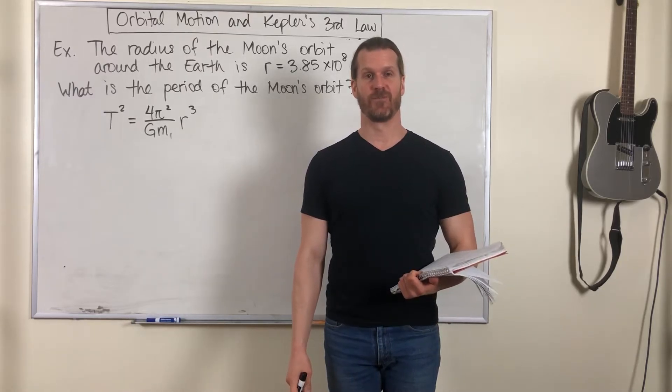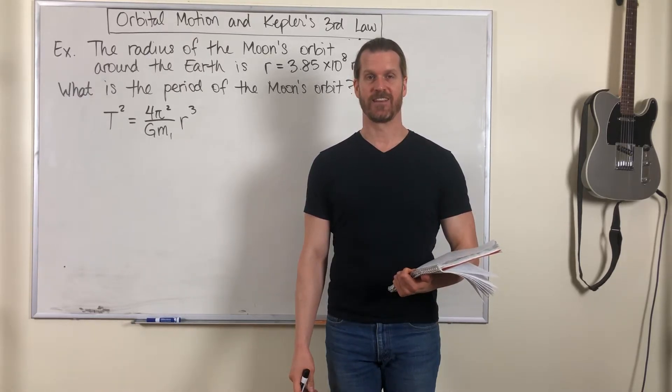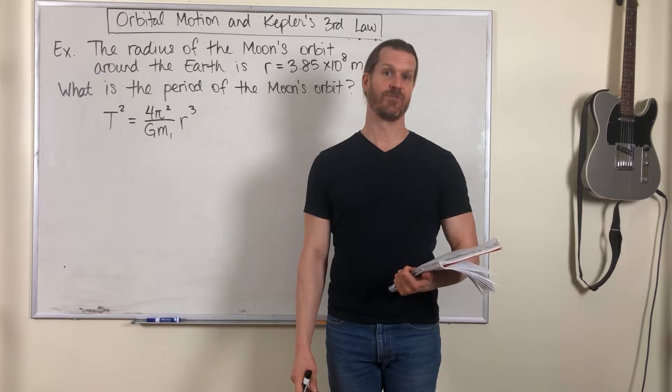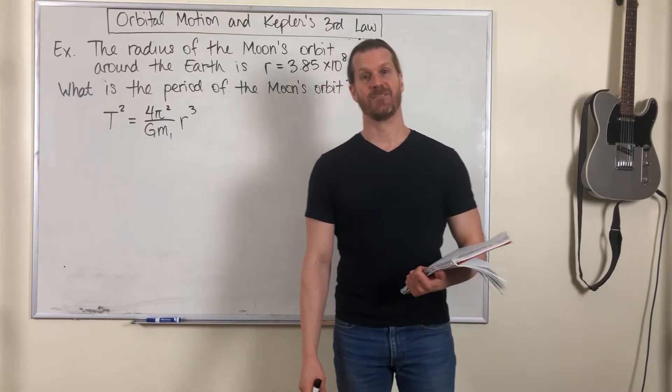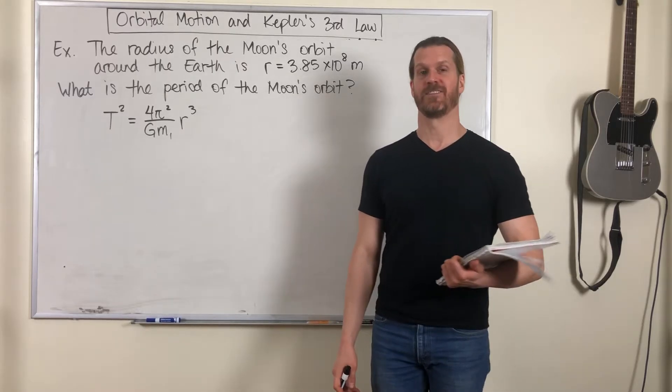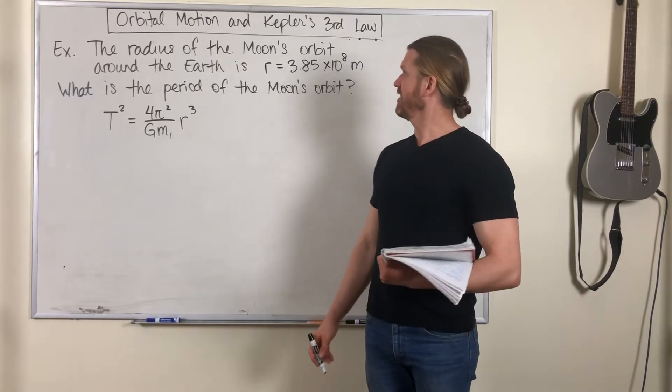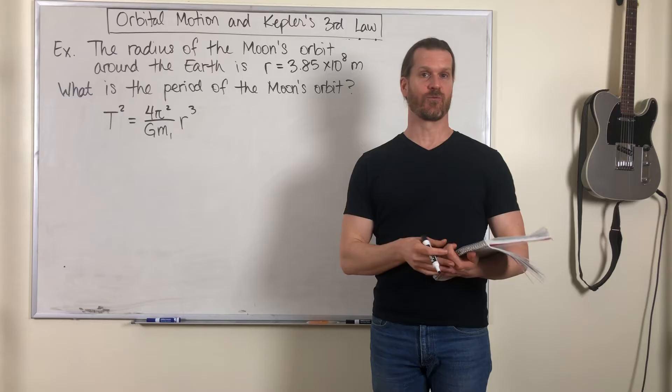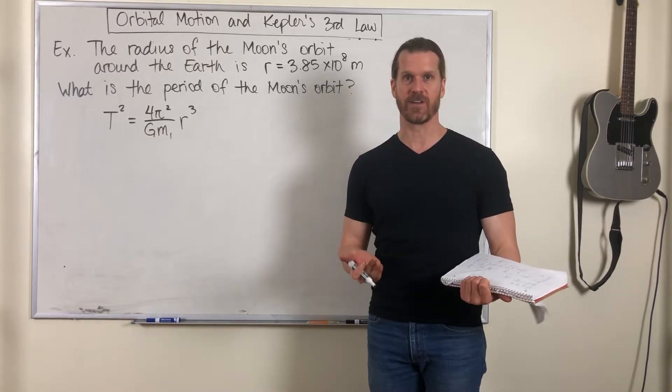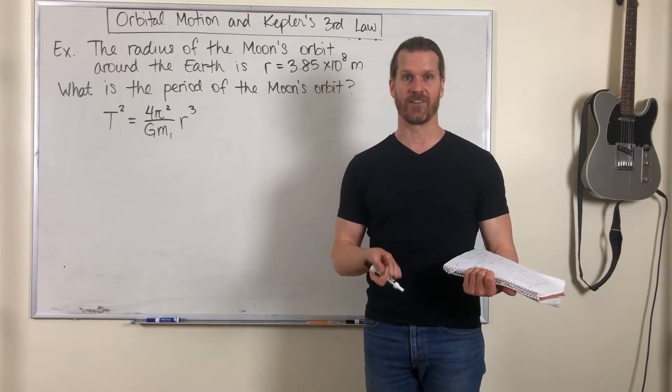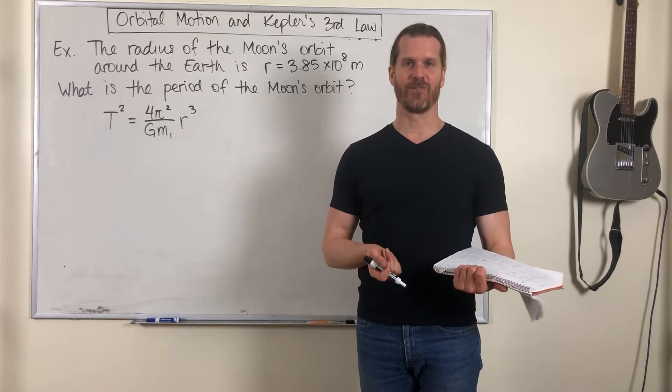All right, let's apply our knowledge of orbital motion now to study a system where you probably know what the answer is going to be. That's the motion of the moon in orbit around the earth. So if we're given the radius of the moon's orbit, let's calculate the period of that orbit, how long it takes the moon to go around the earth.